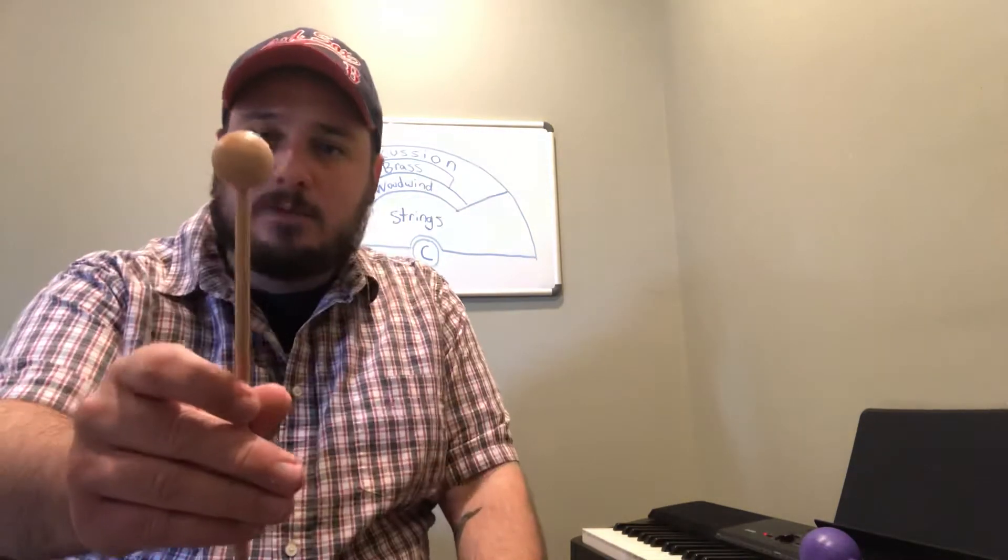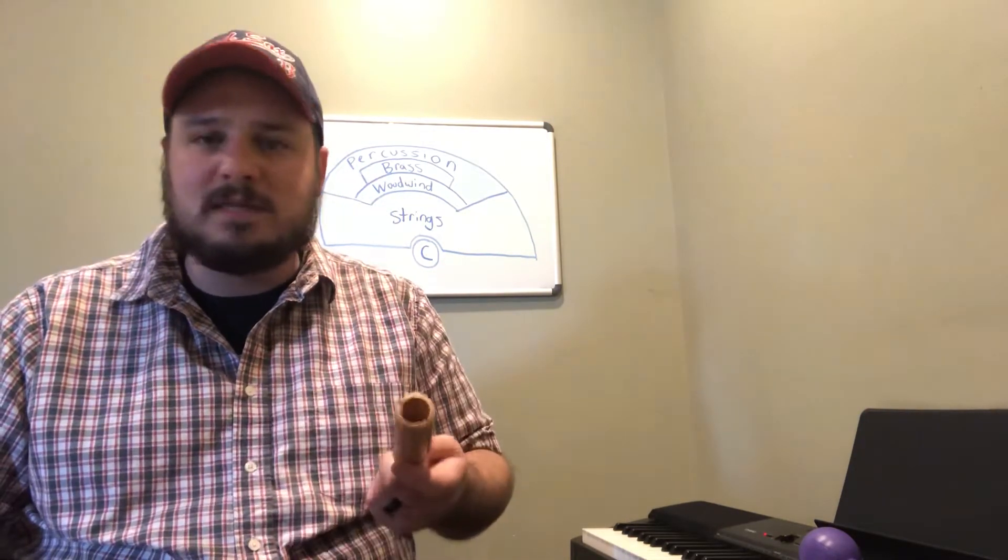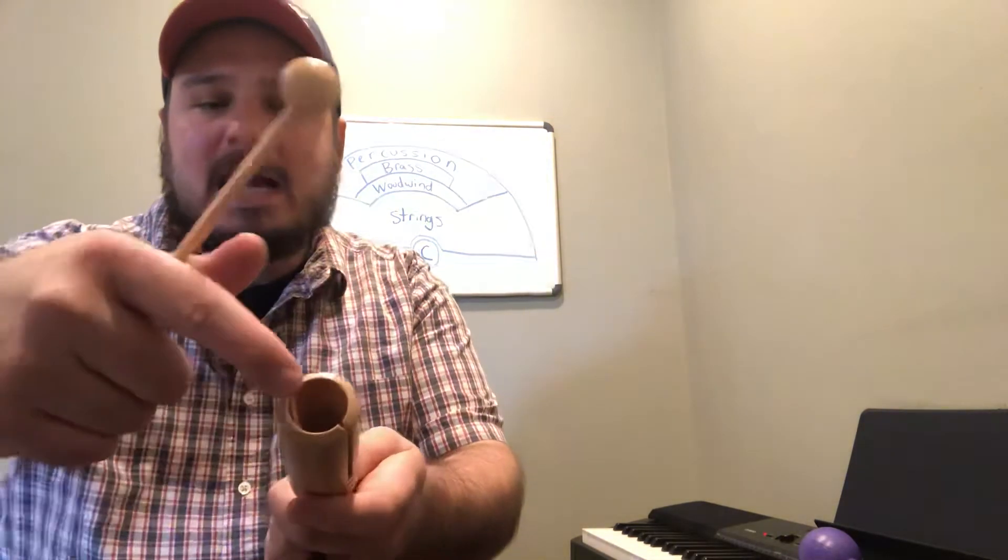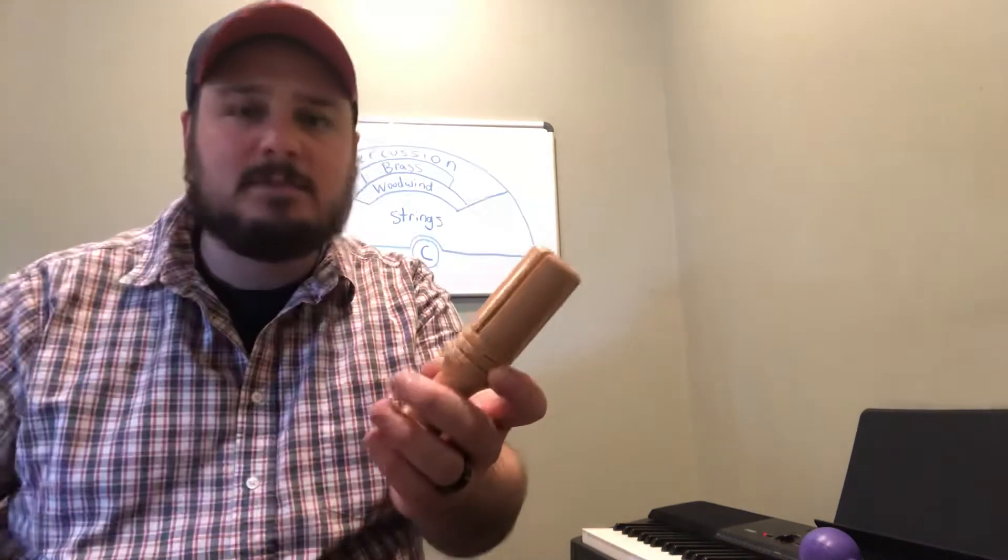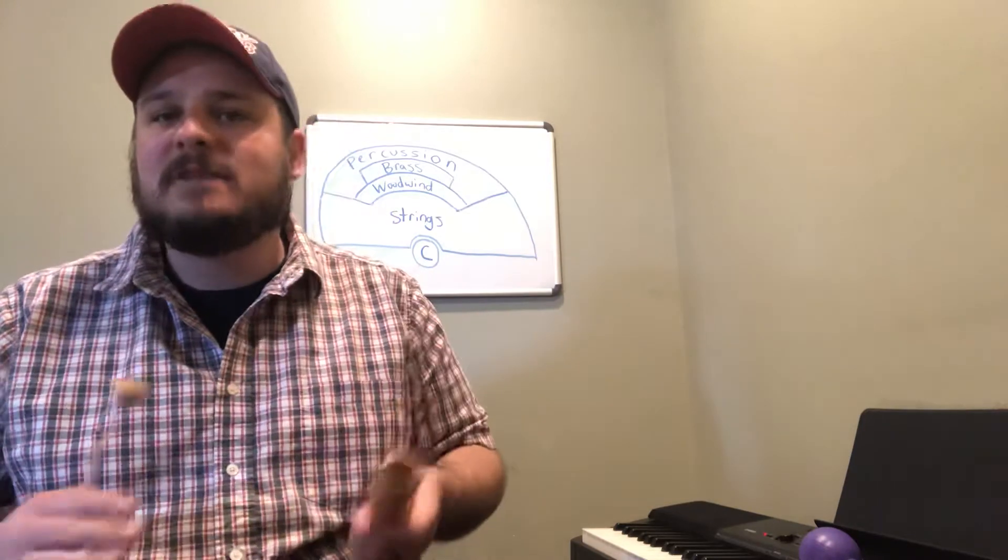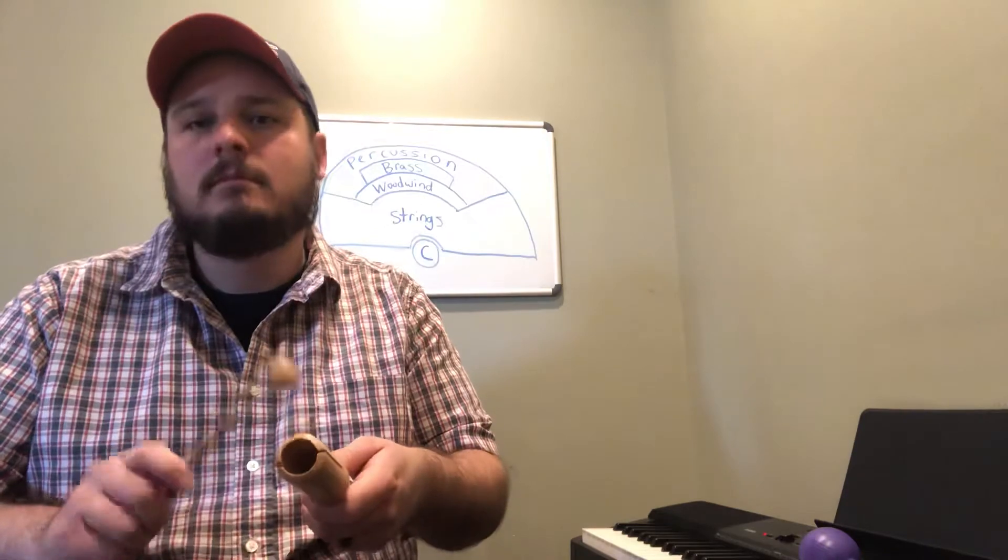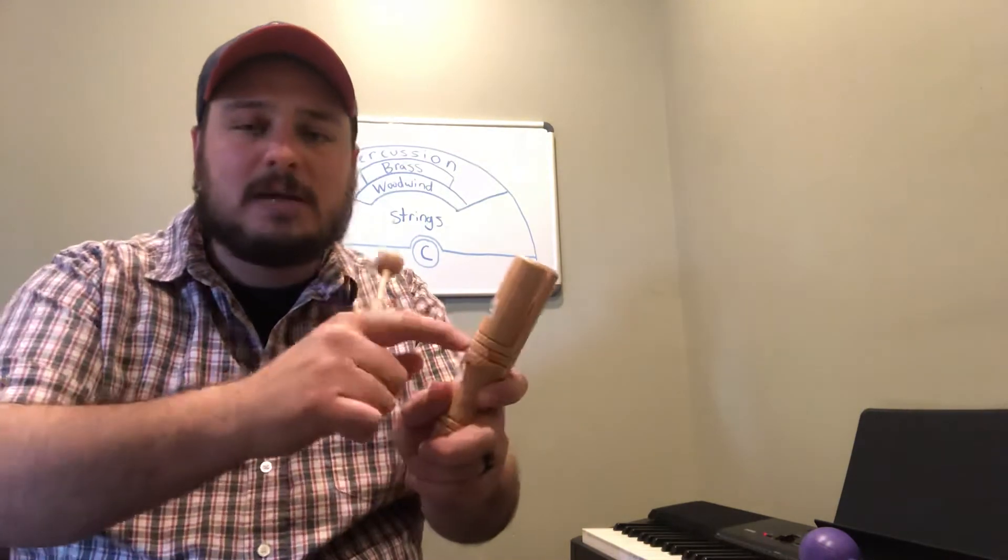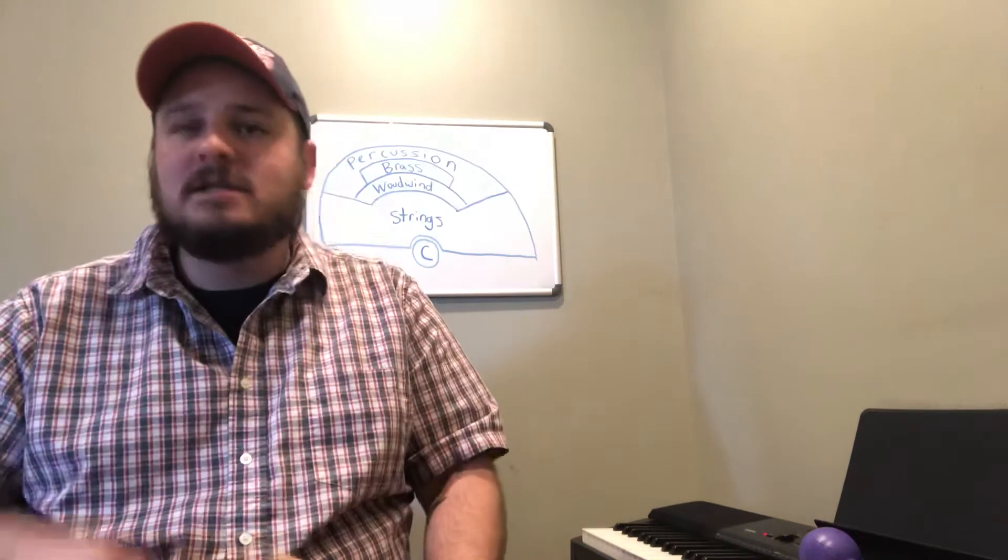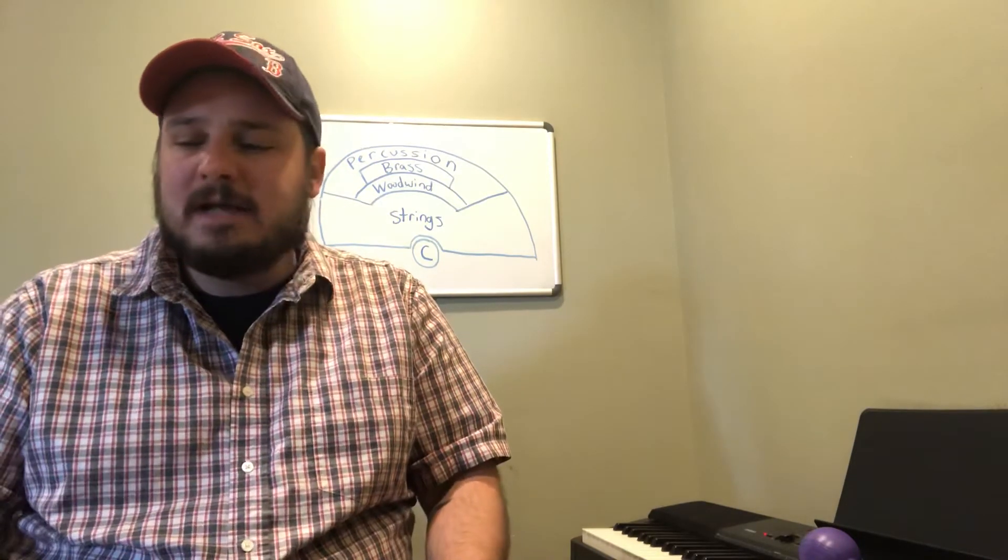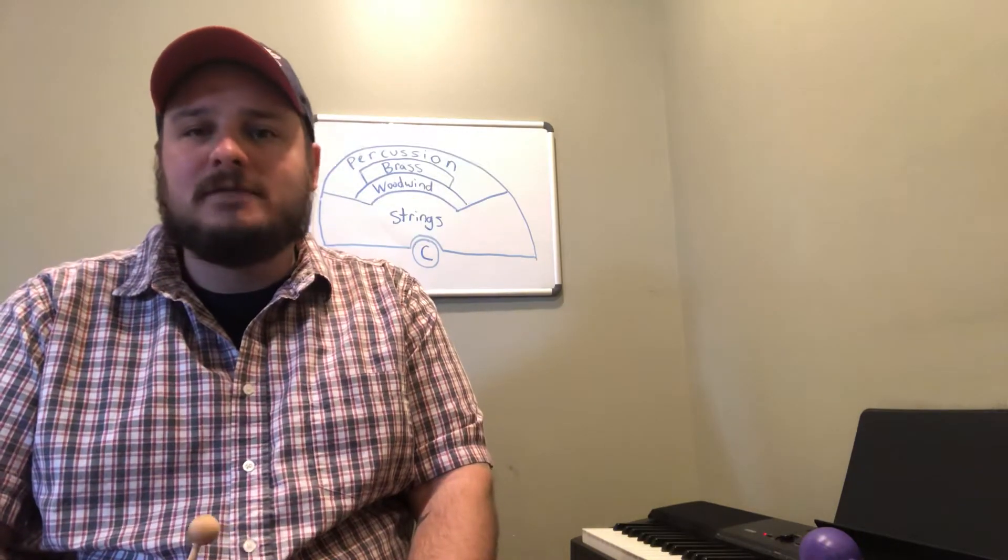We also have this, this is called a tone block and you can see we're using a mallet on this too. This is a little bit like those rhythm sticks. For the most part we have a hollow part right here and a crack up the side, it's supposed to be there to allow the instrument to vibrate and send that sound back at us. But we can also, there's a couple ridges here, change the type of sound we make.